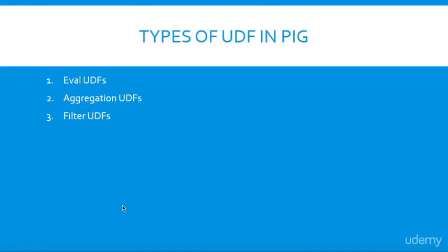There are three types of UDFs in Pig: Eval UDF, Aggregation UDF, and Filter UDF.